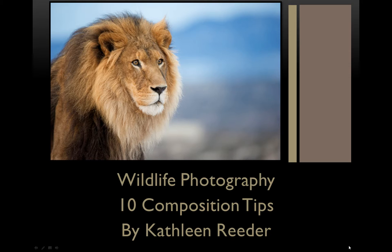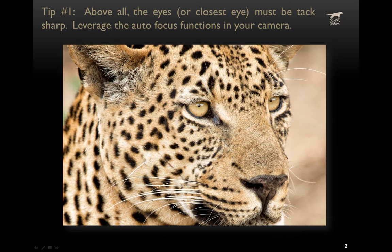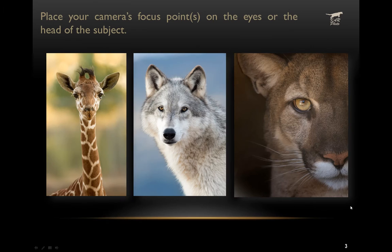Hi, Kathleen Reeder here to give you 10 wildlife photography compositional tips. The first tip is, above all else, make sure that the eyes of your subject are tack sharp, whether it's the eye that's closest to you or both eyes. You'll want to leverage the autofocus function in your camera and place the focus point — whether it's a spot, single, or a small number of points — on the eyes or on the head of the subject.